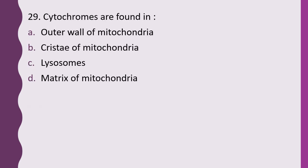Question 29. Cytochromes are found in: outer wall of mitochondria, cristae of mitochondria, lysosomes, or matrix of mitochondria. The correct answer is option B, cristae of mitochondria.